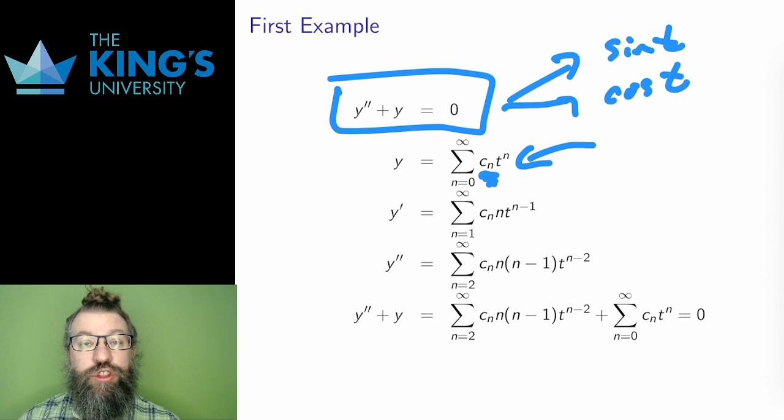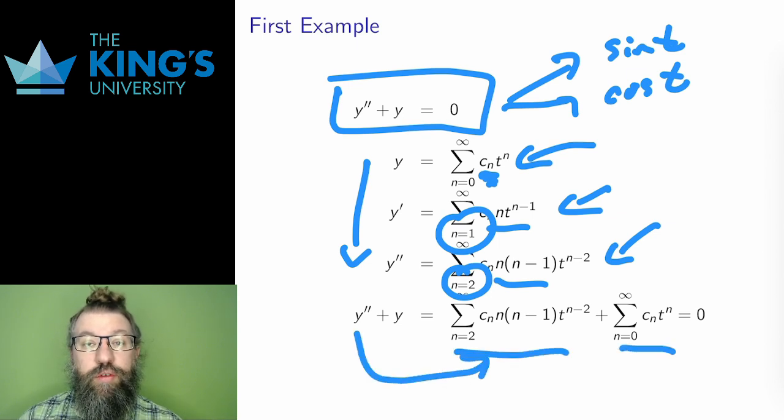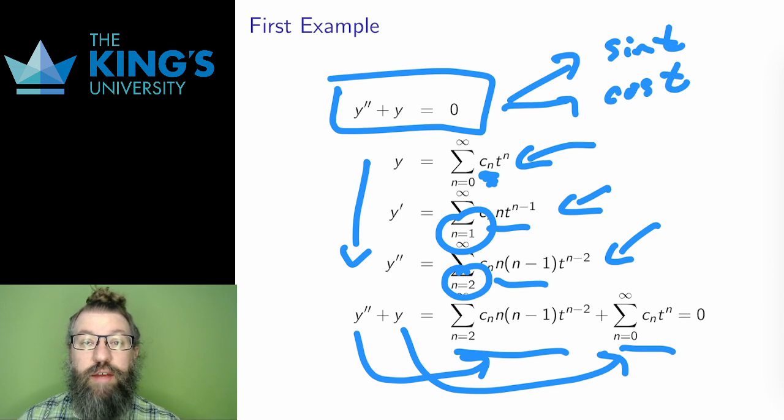Then I calculate the first two derivatives of the series. Series are great, since I can differentiate term by term, and all the derivatives are just power rules. Note that the starting index increases with each time, since each derivative destroys a constant term in the series. Then I put these in the differential equation. There is no first derivative in this DE, but I replace y double prime and y by the series that I've just calculated.